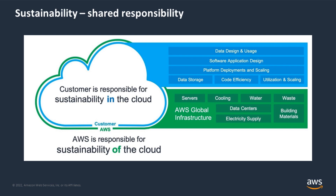Amazon is on path to powering its operations with 100% renewable energy by 2025, and is committed to being water-positive by 2030. Our customers build their applications on top of that global infrastructure and are responsible for the sustainable design and operation of those applications. Tools such as Well-Architected help customers improve sustainability by leveraging efficient software application designs, improving utilization, and reducing waste.